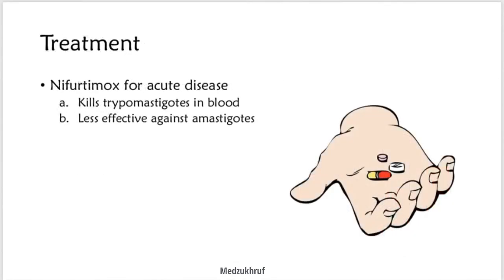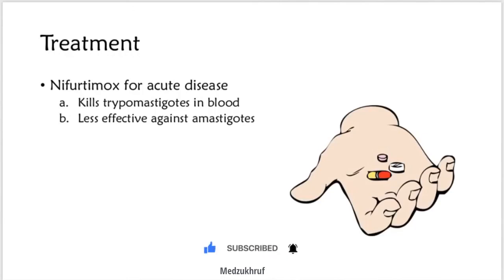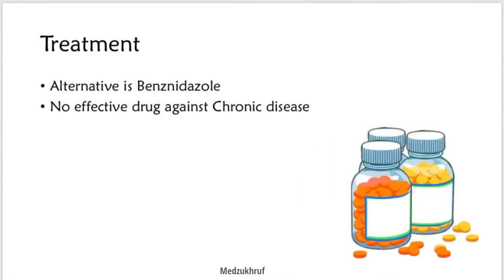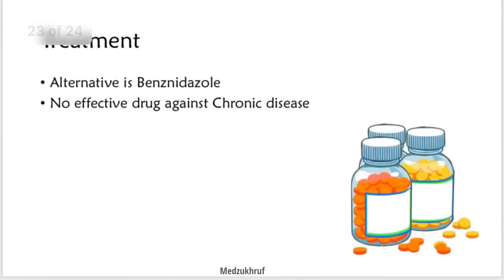Treatment: nifurtimox is used for acute disease — it kills trypomastigotes in the blood but is less effective against amastigotes. An alternative is benznidazole. There is no effective drug against chronic Chagas disease.